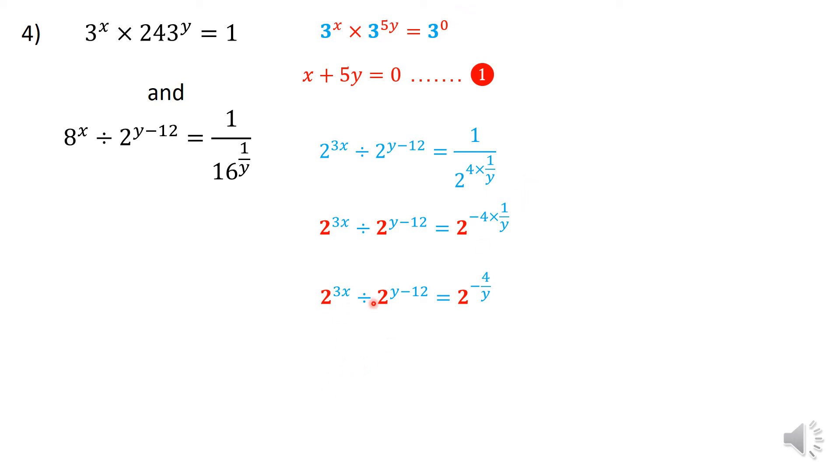And once I'm here, 3X divided by, and because you are dividing, you are going to subtract the indices. So I'm dropping the bases, and you clean that up, you get 3x-(y-12) = -4/y, very important. So I don't like that particular Y there. So I'm going to multiply throughout by Y on the left as well as on the right. That means 3xy - 4y² + 12y, obviously giving me the -4 here.